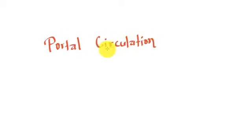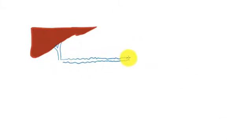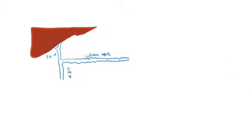Today we are going to discuss portal circulation. Here we have the liver with right and left branches of the portal vein. The superior mesenteric vein and splenic vein unite to form the portal vein, which in turn goes to the liver.